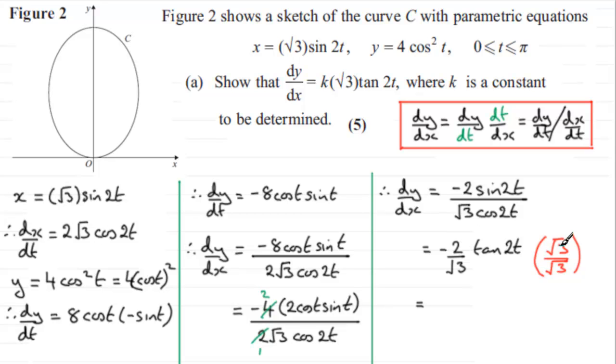So what does this give us? Well, minus 2 times root 3 is just going to be minus 2 root 3. And that will be multiplied by the tan of 2t. And then on the bottom here, we've got root 3 multiplied by root 3, which is 3. So we end up with minus 2 root 3 over 3, tan 2t. And you can see that this is identical, then, to k root 3, tan 2t. And we're asked to work out the value of k. K is a constant to be determined. And you can see that k must correspond to the minus 2 thirds. So we can say where k equals minus 2 thirds.